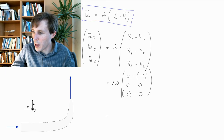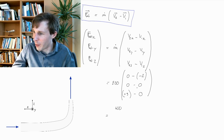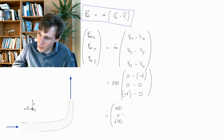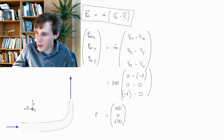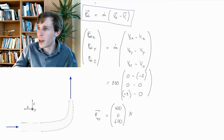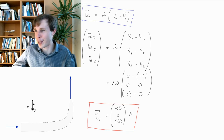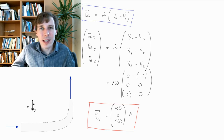This adds up as: 200 multiplied by plus 2 equals 400 in x; 0 in y; and 200 multiplied by 3 equals 600 in z. This is f_net. The units of force are newtons, so the result is 400, 0, and 600 newtons. This is how you solve with math for the net force applying to a fluid as it transits along.